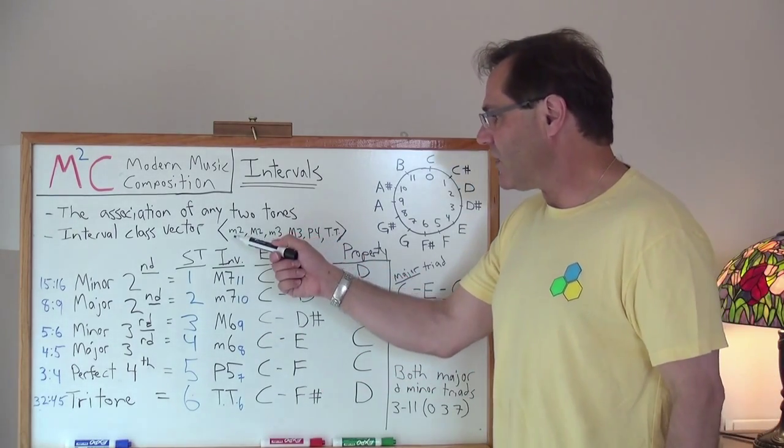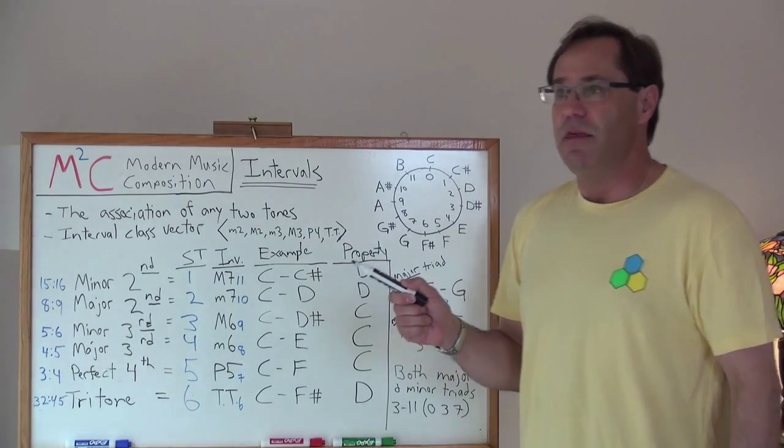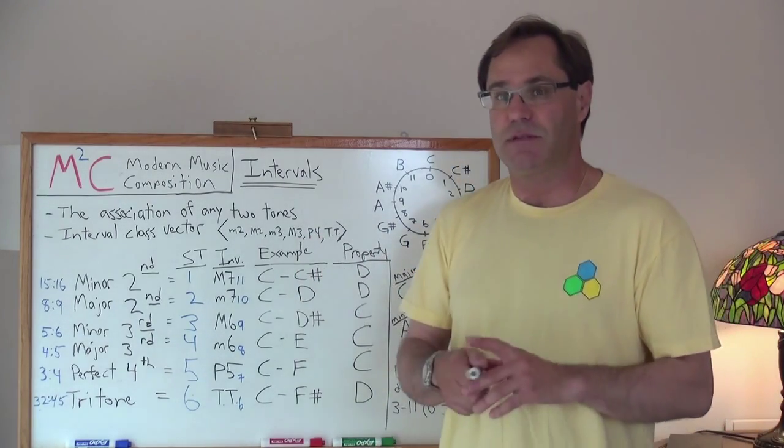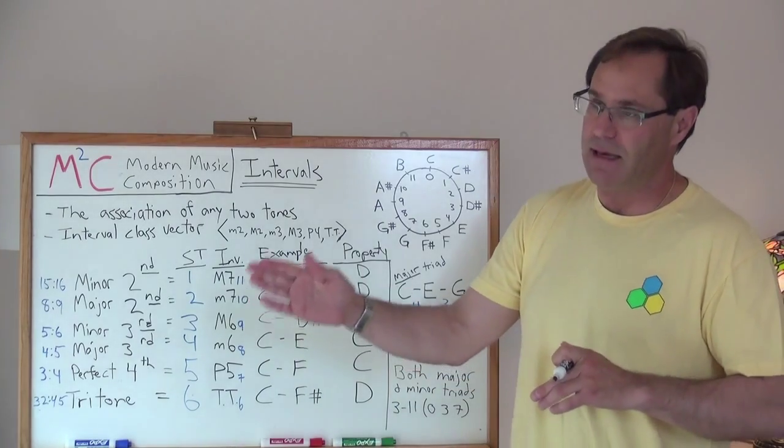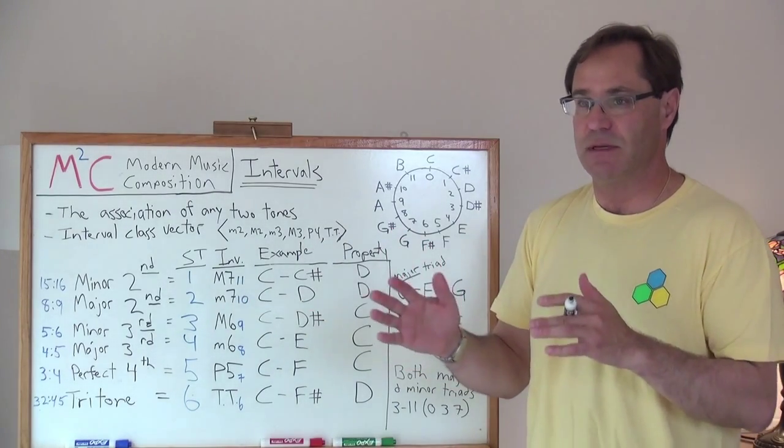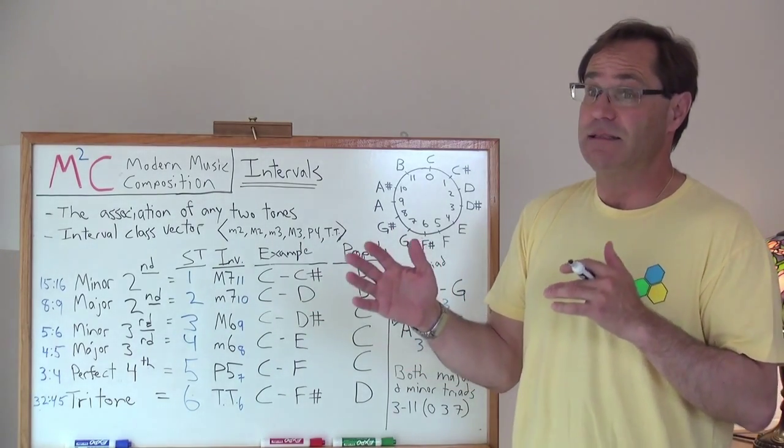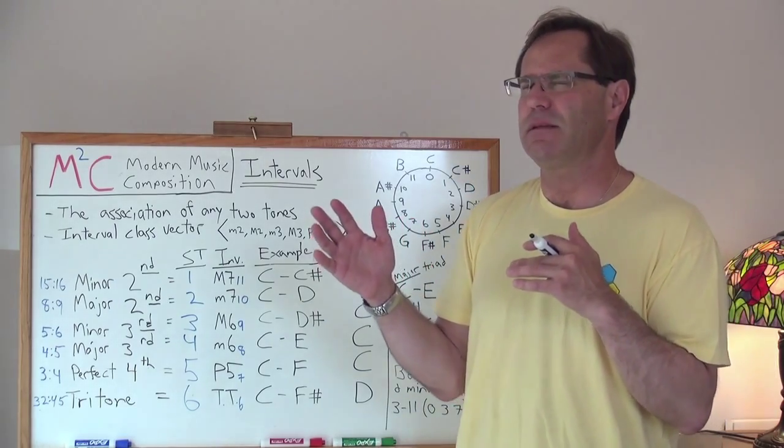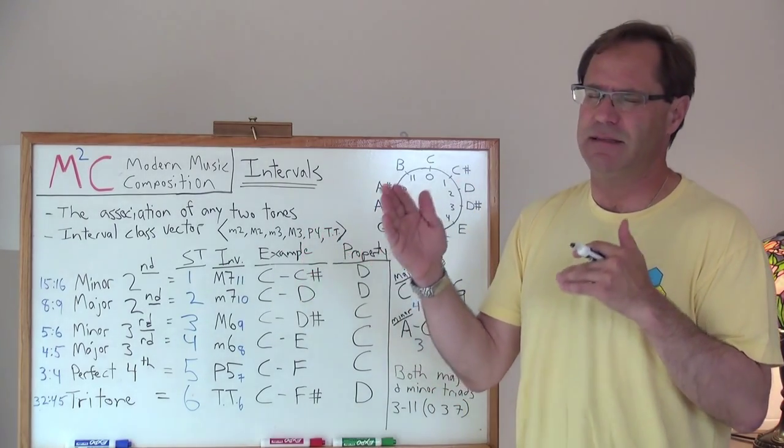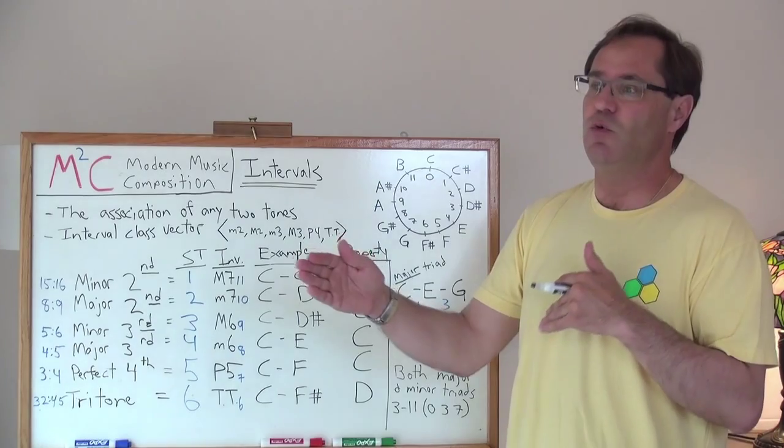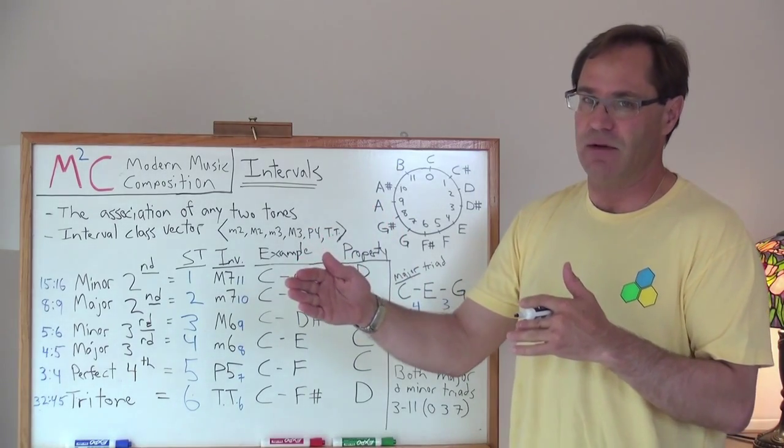But what the interval class vector shows you is it actually has a couple interesting properties. One, it will tell you what that piece of music, what any series of tones in a set class, it will tell you what that is going to sound like on average.